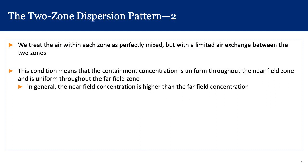The two boxes, one within the other, are both perfectly mixed, just as in the case of the well-mixed room model. But there is some amount of air exchange between these two zones. The concentration of the contaminant is uniform throughout the near-field zone and also throughout the far-field zone. In general, we expect that the near-field concentration is higher than the far-field concentration because we are nearer the source.